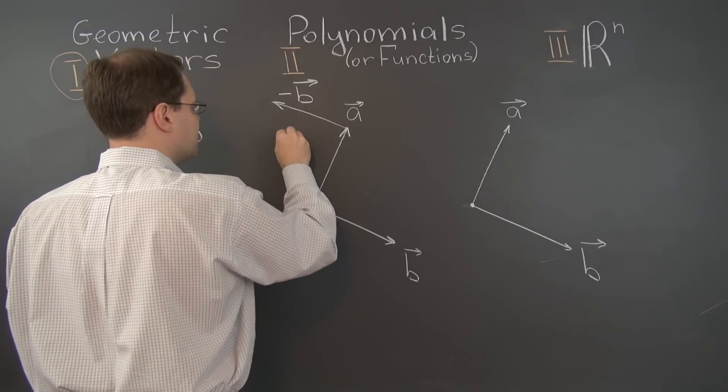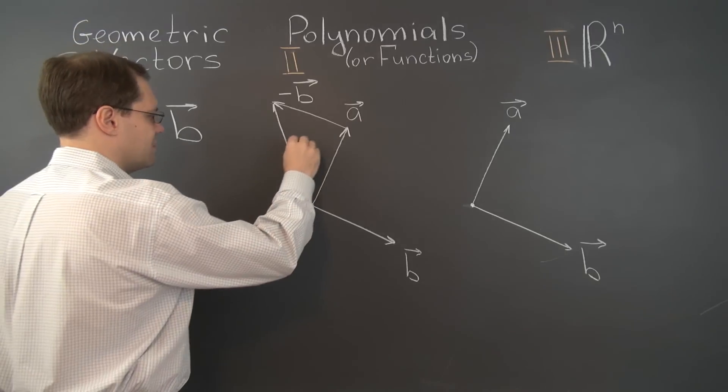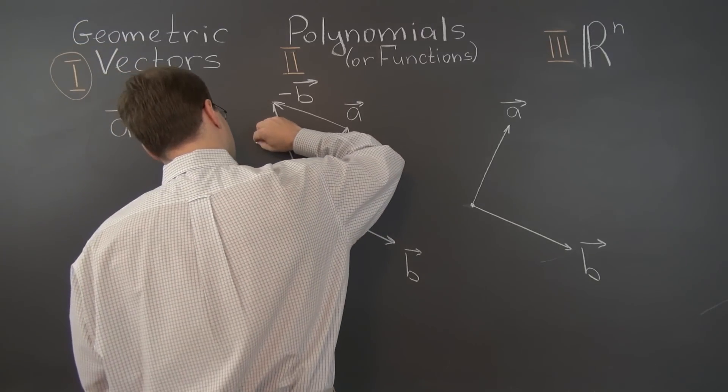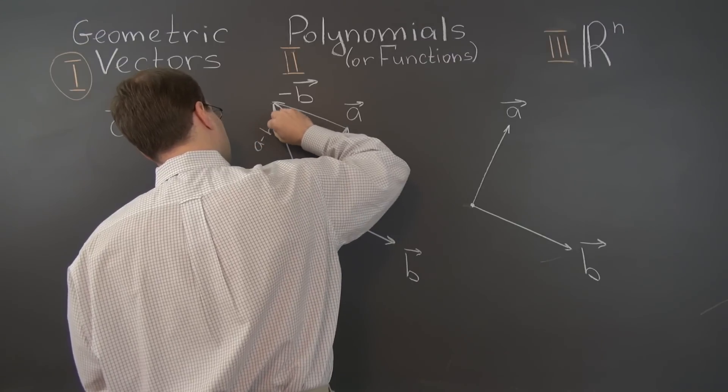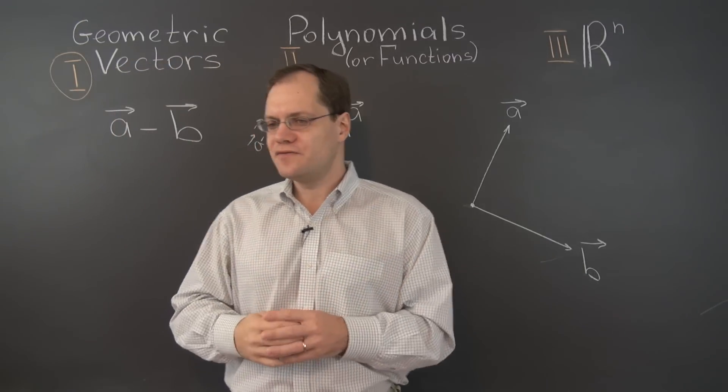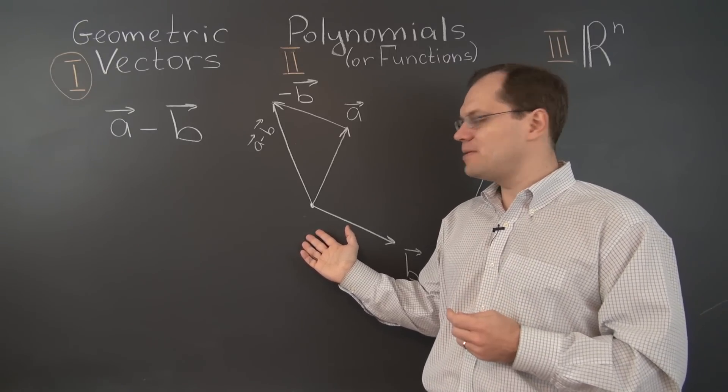That was minus B, and here is A minus B right here. A minus B. So that's one way of doing it, and it's pretty good. There was nothing particularly complicated about this approach.